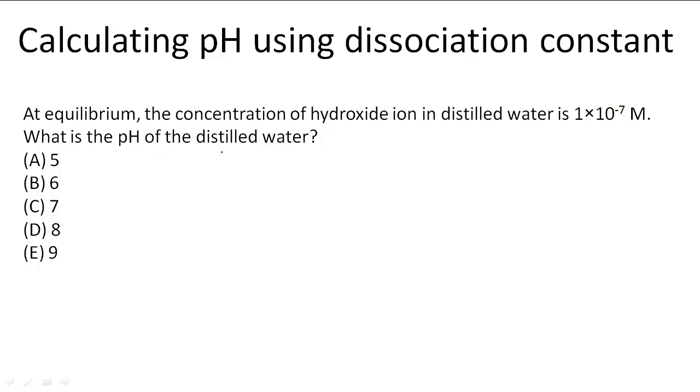What is the pH of the distilled water? pH equals the negative log of the concentration of H plus ions, or hydrogen ions. But we only know the OH negative, the hydroxide ion concentration as 1.0 times 10 to the negative 7th molar.